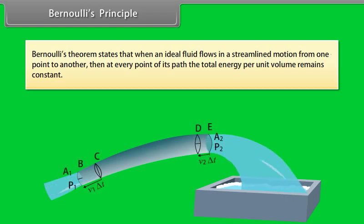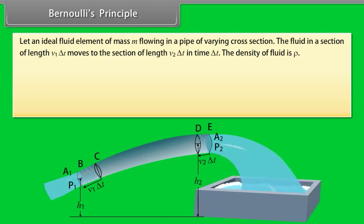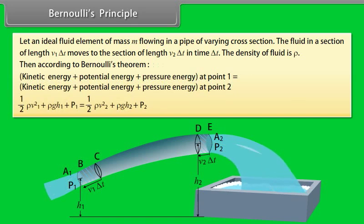Bernoulli's principle. Bernoulli's theorem states that when an ideal fluid flows in a streamlined motion from one point to another, then at every point of its path, the total energy per unit volume remains constant. Let an ideal fluid element of mass M flow in a pipe of varying cross-section. The fluid in a section of length V1 delta T moves to the section of length V2 delta T in time delta T. The density of fluid is rho. Then, according to Bernoulli's theorem, sum of kinetic energy, potential energy, and pressure energy at point 1 equals sum of kinetic energy, potential energy, and pressure energy at point 2.